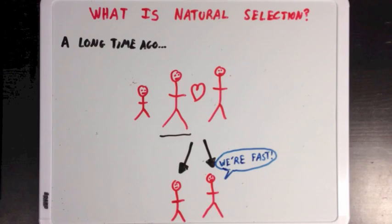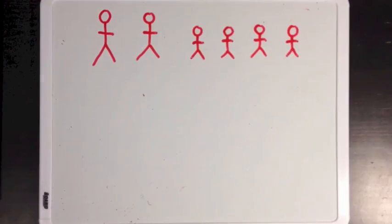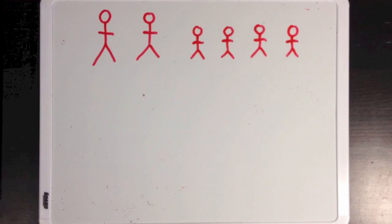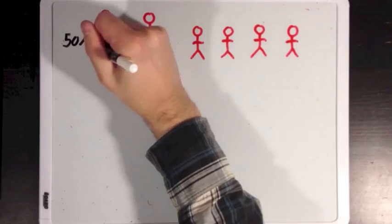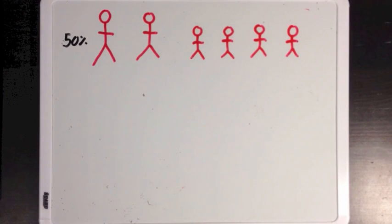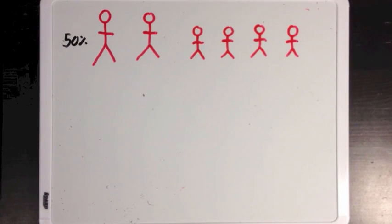Now let's look at this idea again, but a little more deeply. Let's say there are six people in the world and two of them have longer legs than everyone else. And let's say that the ones with the longer legs have a 50% chance of surviving and reproducing, while the shorter-legged people have only a 25% chance of surviving and reproducing.